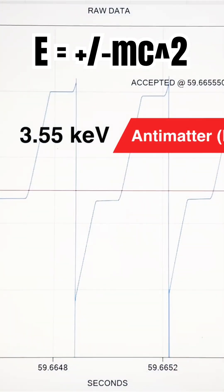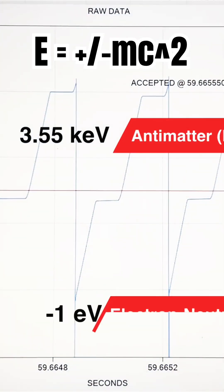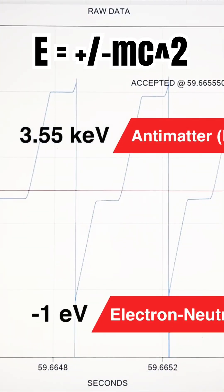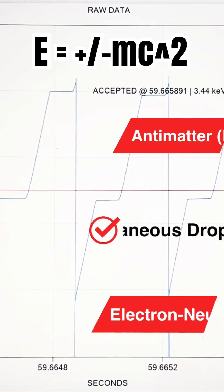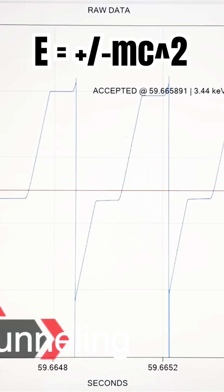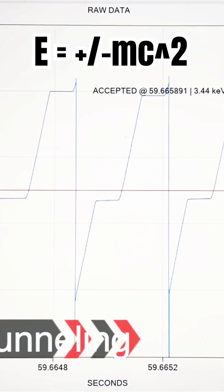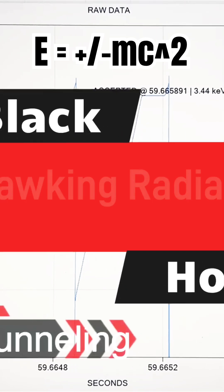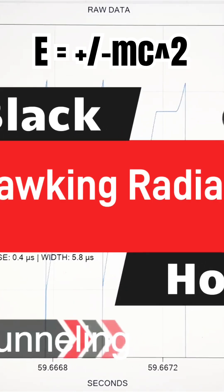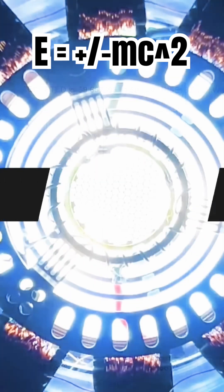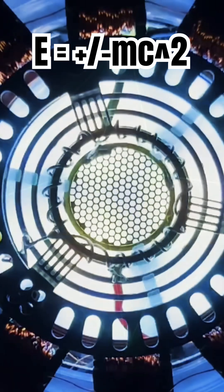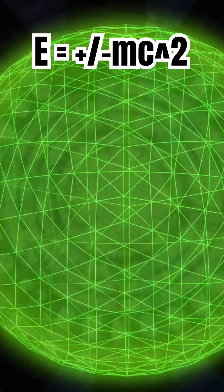This one is a 3.28 keV rise time up to here. But then the drop — we don't really know what the drop is. This computer can only calculate positive photons. And the thing about it is we're actually creating positive and negative photons with this reactor, which means this is gravity. It's pretty amazing.